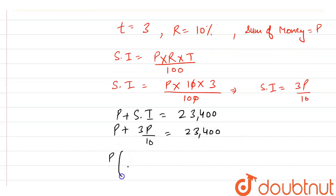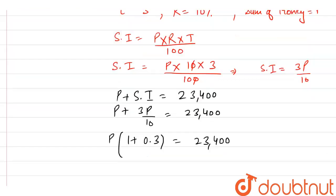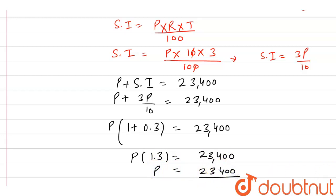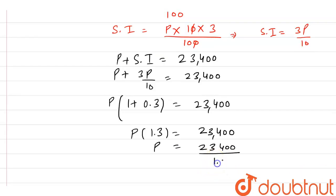Taking p common: p × (1 + 3/10) = 23,400, which gives p × 1.3 = 23,400. So p = 23,400 / 1.3, which gives us p = 18,000. Therefore the principal amount is rupees 18,000.